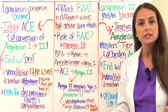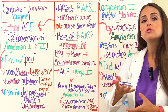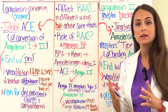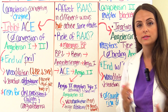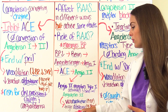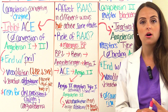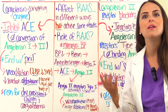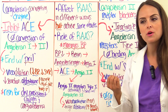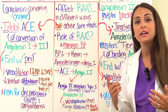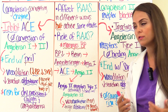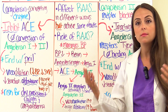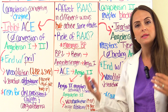Whenever angiotensin II binds with those type 1 receptors, it is going to lead to the results we need. It's going to cause vasoconstriction of our smooth vessels — constricting vessels helps increase blood pressure and increase systemic vascular resistance. In addition, it's going to trigger the release of aldosterone by the adrenal cortex. The whole reason for this is to help increase blood volume, because if we can increase blood volume and constrict our vessels, we will definitely increase blood pressure and maintain tissue perfusion.